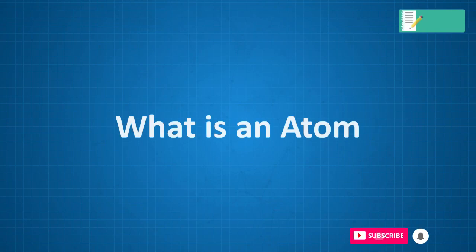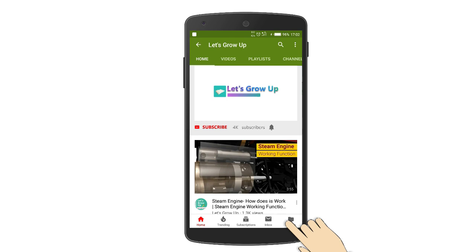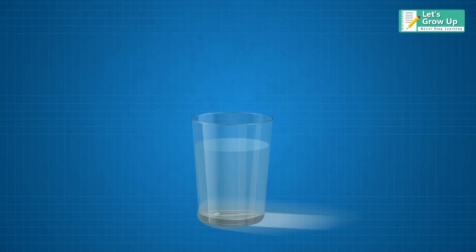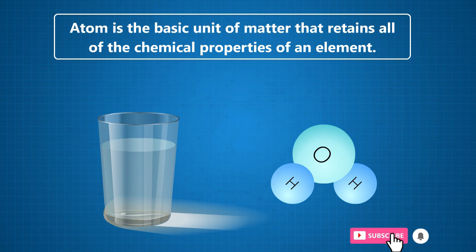Do you know what is an atom? In this topic we will learn about the history of the atom. Atom is the basic unit of matter that retains all of the chemical properties of an element. Atoms combine to form molecules.